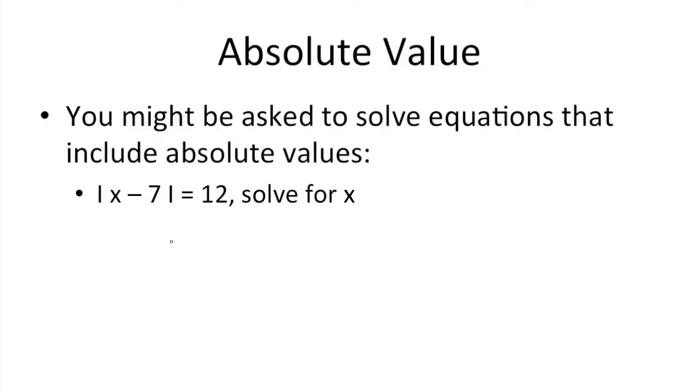The way you'd go about doing this is by first removing the absolute value symbols, which would get you x minus 7 is equal to 12. However, you'd also need to solve in case the number is negative. In this case, you would just put a negative through x and negative 7, which would give you negative x plus 7 equal to 12.